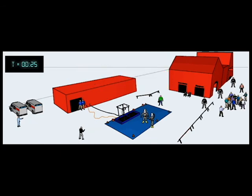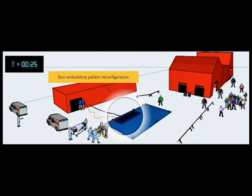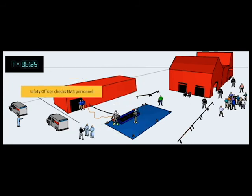The ambulance transporting the two non-ambulatory patients is directed to back up their vehicle to the entrance of the hospital decontamination zone. The decon corridor is reconfigured for non-ambulatory patients. The safety officer checks the status of the EMS personnel.